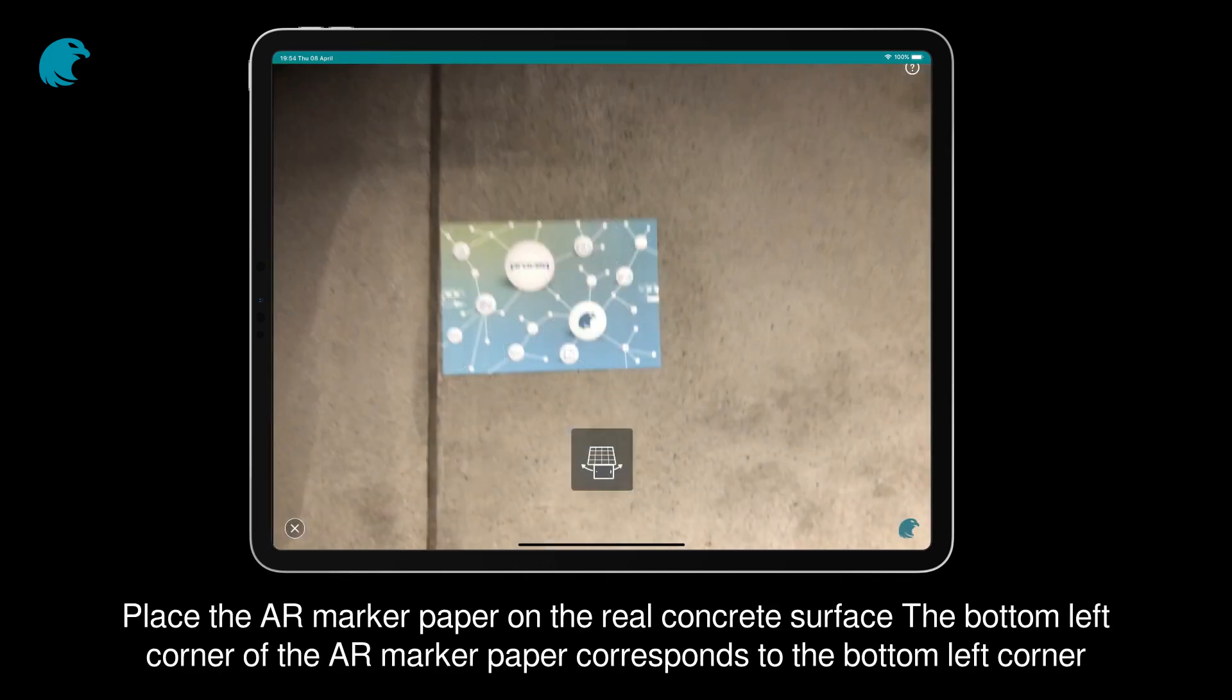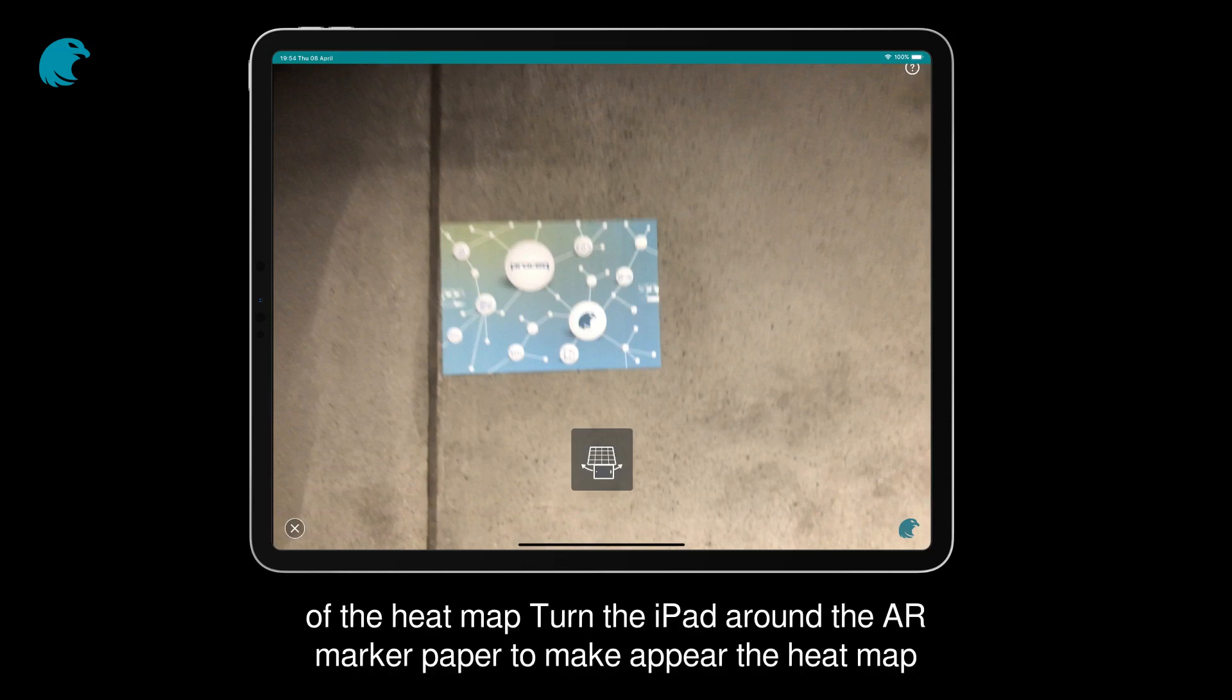Place the AR marker paper on the real concrete surface. The bottom left corner of the AR marker paper corresponds to the bottom left corner of the heat map.